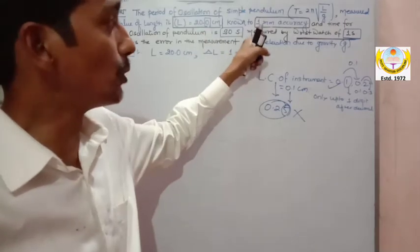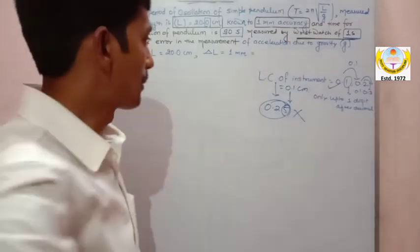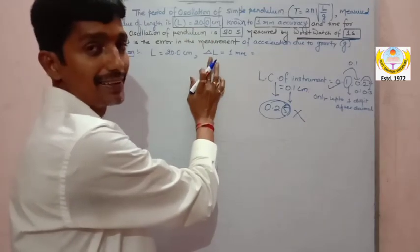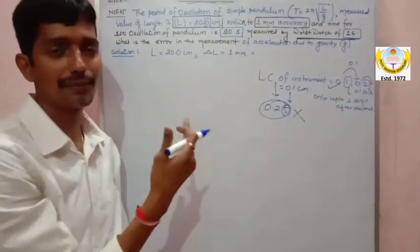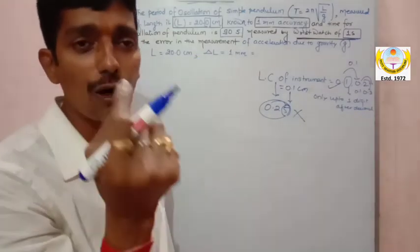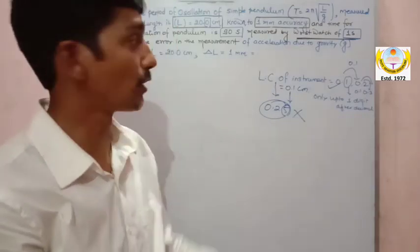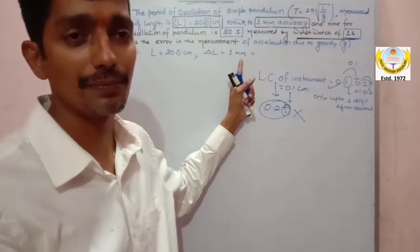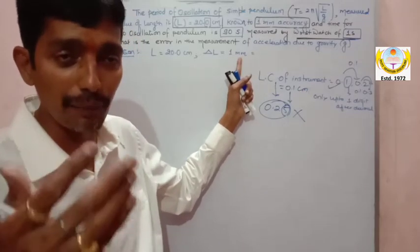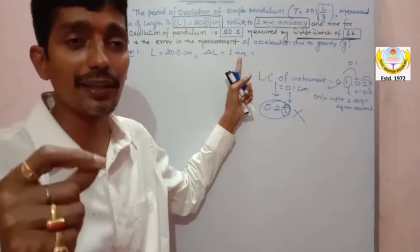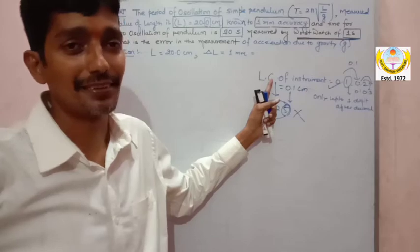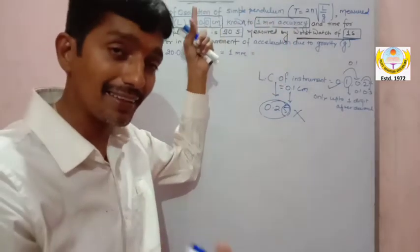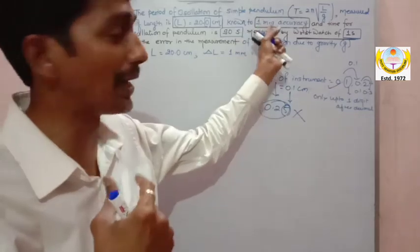So the true value of length is 20 centimeters and the error in length — the minimum or maximum error — is one millimeter. The least count of the instrument is 0.1 centimeter, so the least count error is the error occurring due to the least count of the instrument. This one millimeter accuracy represents the error in length.